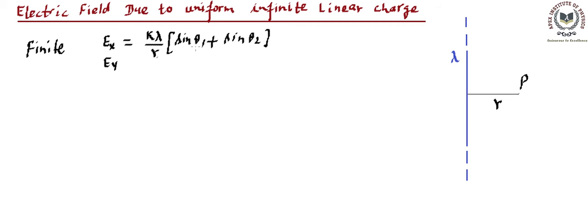This direction was perpendicular to the direction of the linear charge. Similarly, the Ey component came out to be k lambda upon perpendicular distance r times (cos theta 1 minus cos theta 2). We can use these relations to find out the field due to infinite linear charge as well.